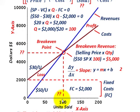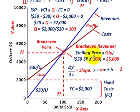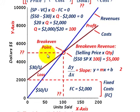Break-even revenue is the selling price times the break-even quantity: $50 × 100 = $5,000. This $5,000 represents both the revenues received and the costs at break-even — revenue minus cost equals zero at that point.